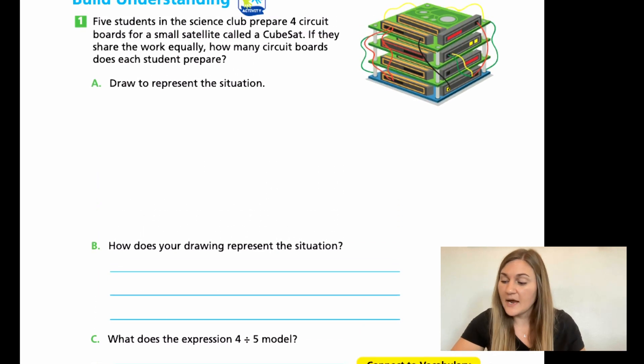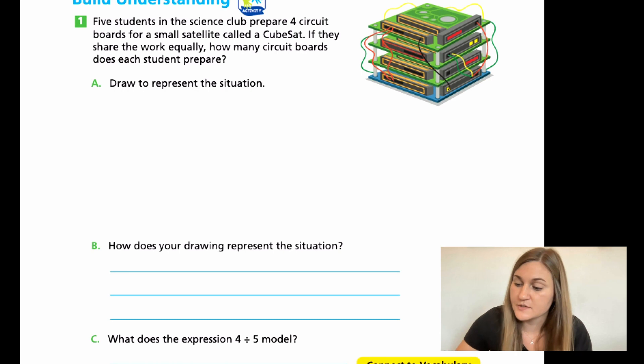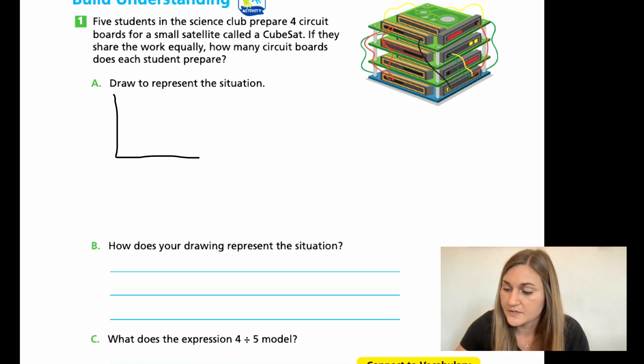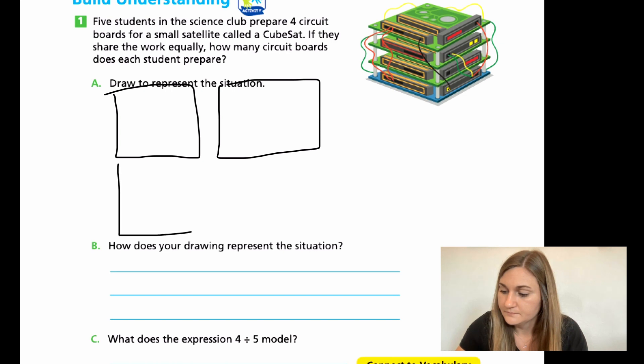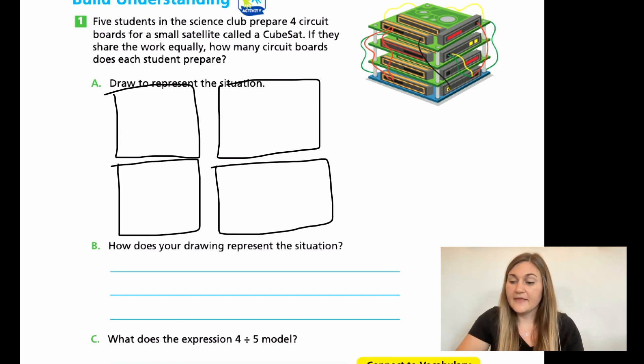All right, great work. Let's go ahead and solve these together. So for A, I'm going to be drawing to represent the situation. So I know that I have four circuit boards. So I'm going to go ahead and start with just four squares here. All right, and then I know I have five students that are working on these boards. So for each board, I'm going to be cutting it into five for each student working on each board.